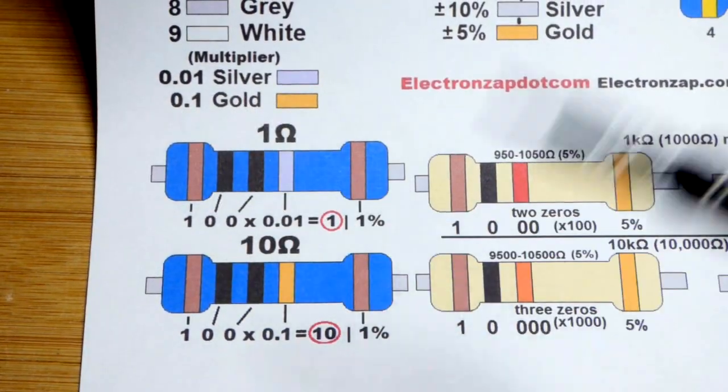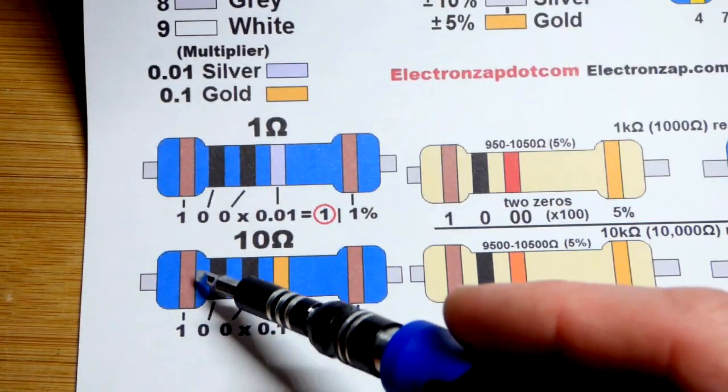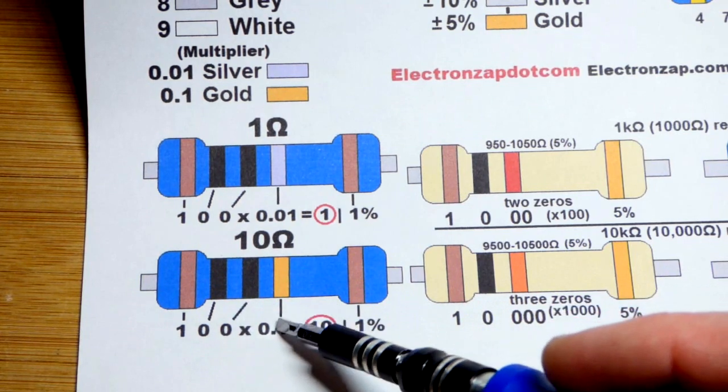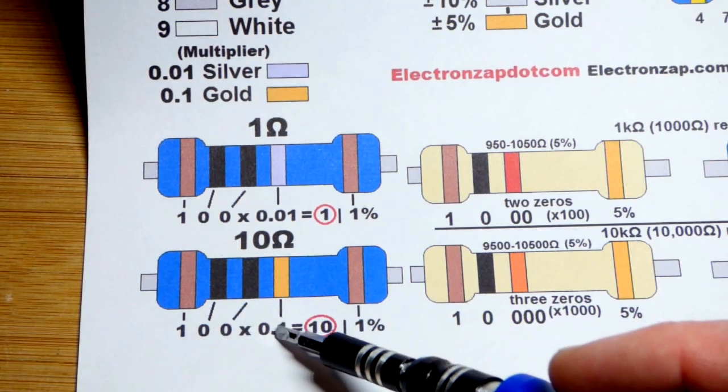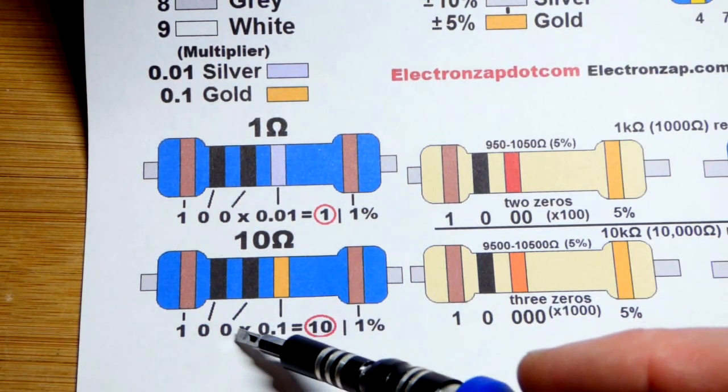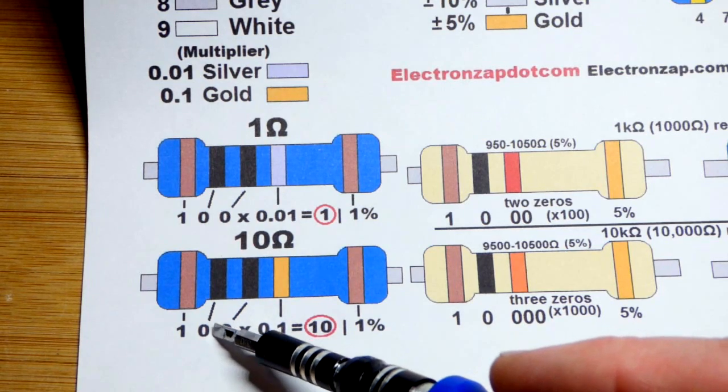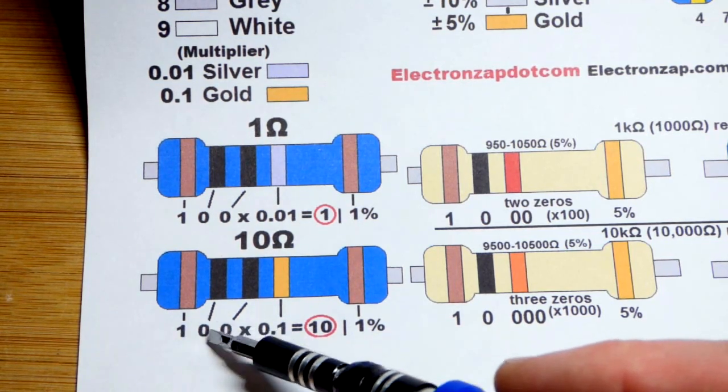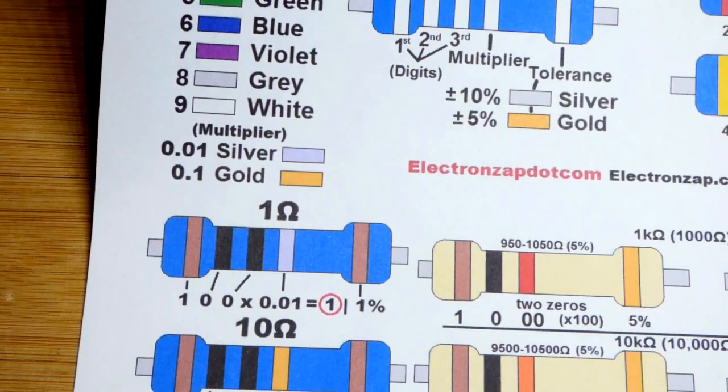And then gold, basically the same thing. Except for you got 1, 0, 0 and then the multiplier is 0.1. So there's one spot to move the decimal point. So you move the decimal point there and you got 10. So 1, 0 for 10 ohms. Pretty common.